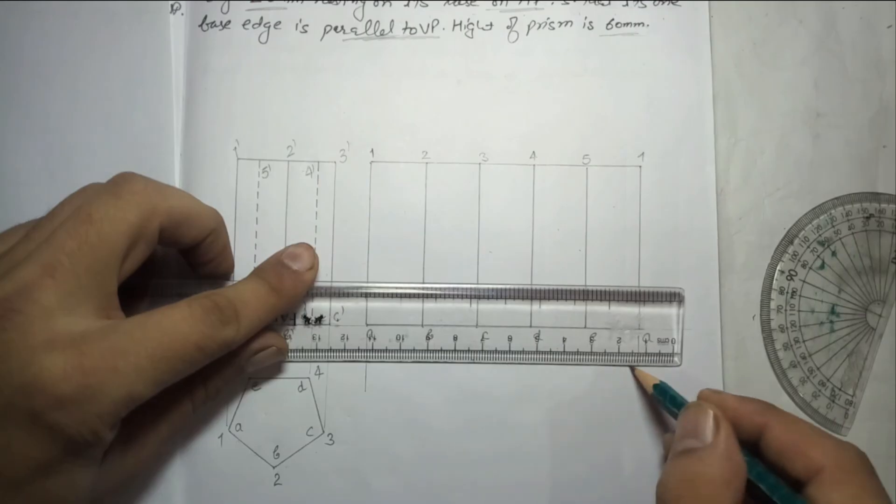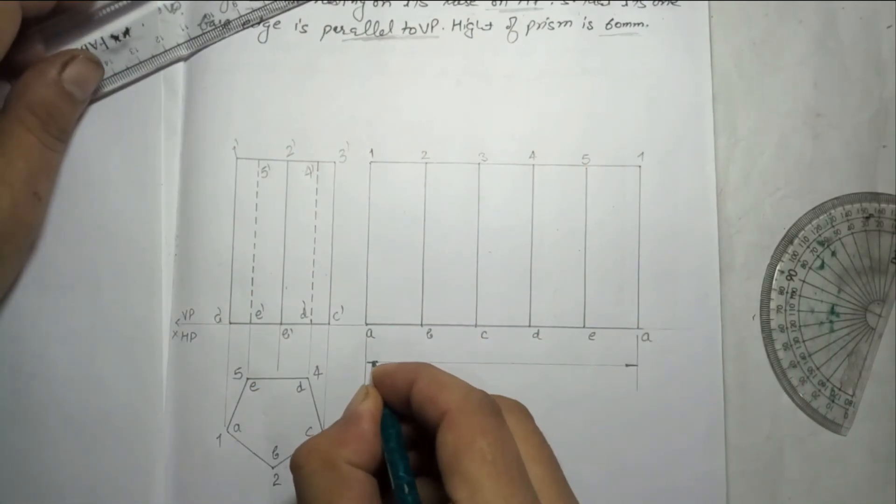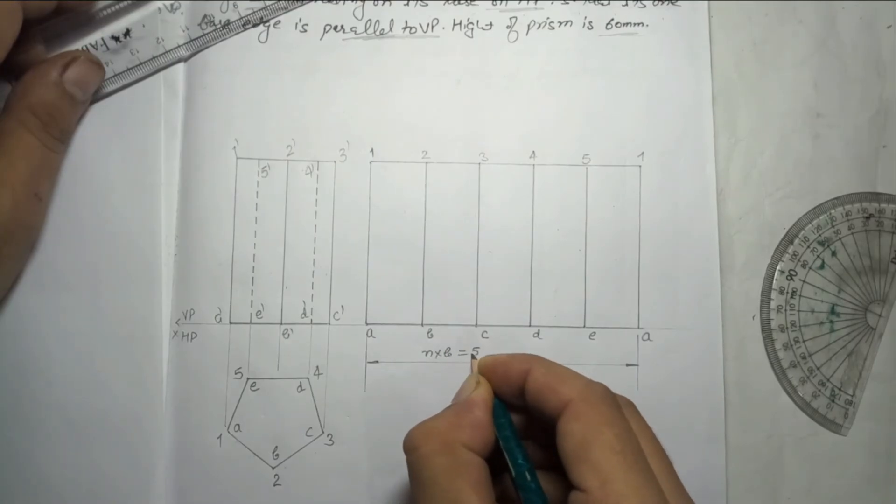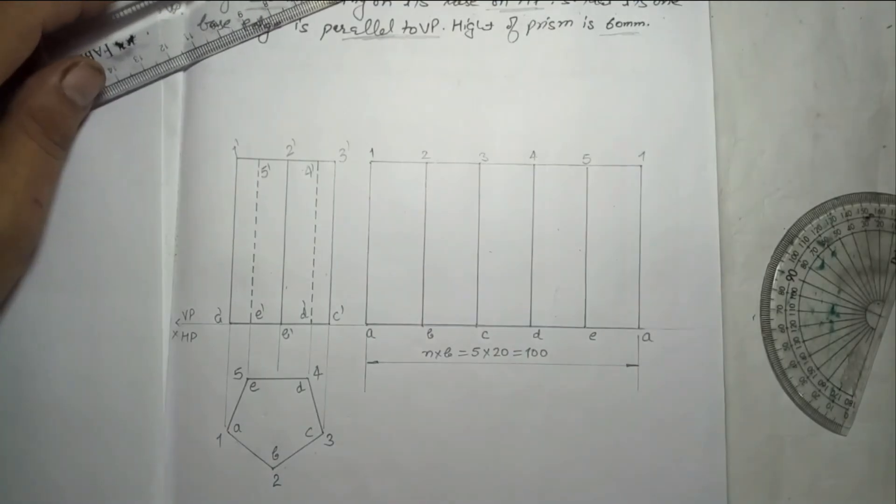Now what will be the dimension of this? 5 times 20. So I suggest you give the dimension in this way: n into b, means n is the number of sides, that is 5 into base edge 20, which equals 100mm.